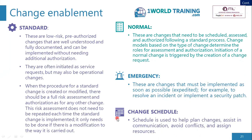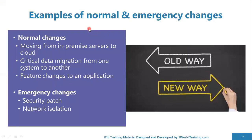A change schedule or calendar is used to help plan changes, assist in communication, avoid conflicts, and assign resources. Examples of normal changes include moving from on-premise servers to the cloud and critical data migration from one system to another — both require authorization after assessment. Feature changes to an application requested by a customer also go through a normal change mechanism. Emergency changes could be a security patch or a network isolation, typically to prevent security issues or incidents.